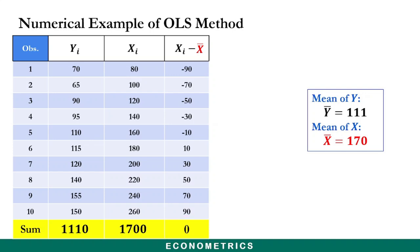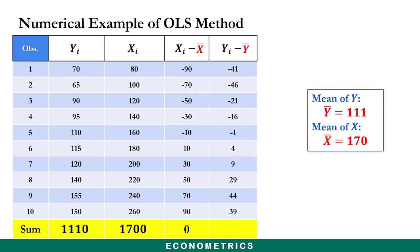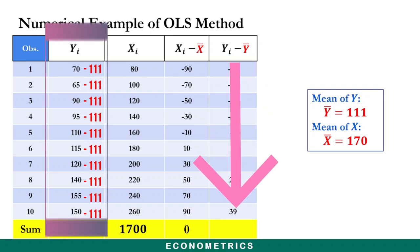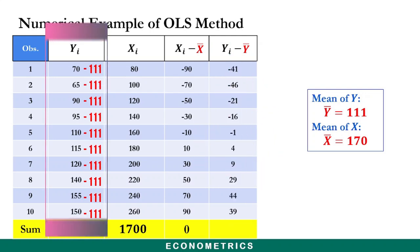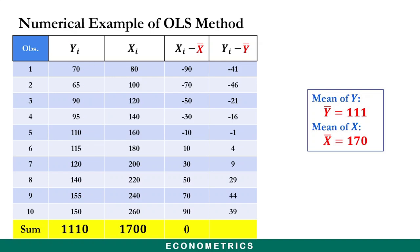This will have some useful properties in later video lessons. We also expand the column to include the deviation of y, where we subtract the mean of y from each value of y. When we sum the deviation of y, we also get the result to be zero.